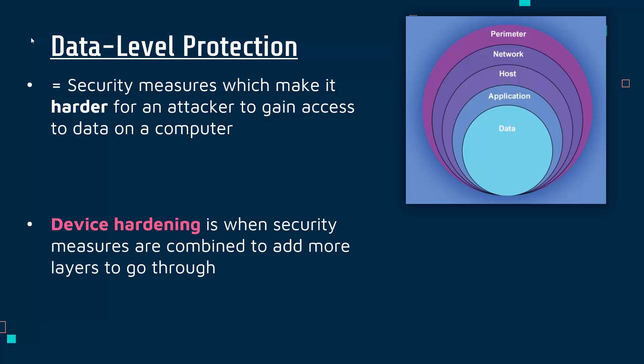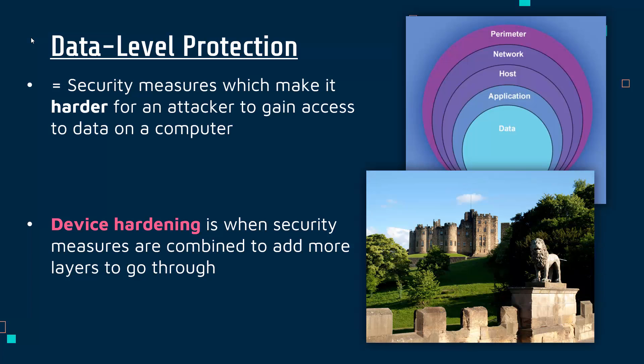For this and the next few videos we're looking at different methods which apply at this data level. We're looking at device hardening, which is a general method you go through in order to combine different security measures, trying to add as many layers as possible — different obstacles and hurdles for an attacker to jump through in order to gain access to data. You can imagine the attacker starting at the perimeter, trying to break through, then the network, then the host, and so on, until eventually reaching the data. It's like a castle with not just one security measure but loads of them. It's what we call defense in depth.